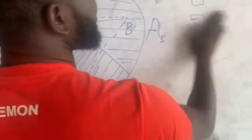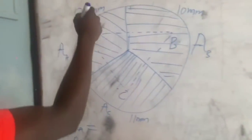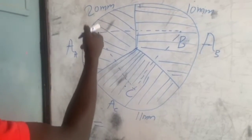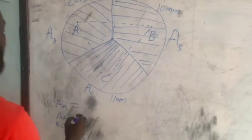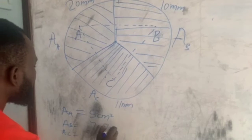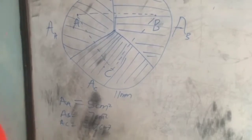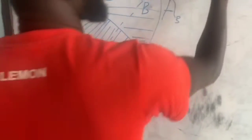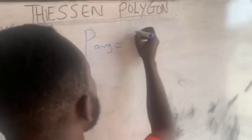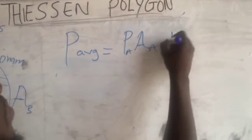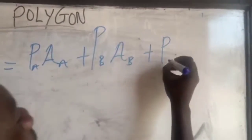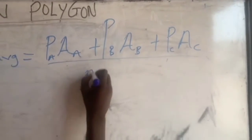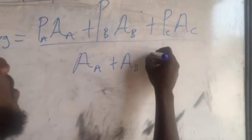Since we are learning this manually, let us assume when we counted full boxes for area A we had maybe five, and more than half boxes gave us ten. So let's say area A gives 5 cm², area B gives 7 cm², and area C gives 8 cm². The average precipitation P is: precipitation at A times area A, plus precipitation at B times area B, plus precipitation at C times area C, all divided by area A plus area B plus area C.